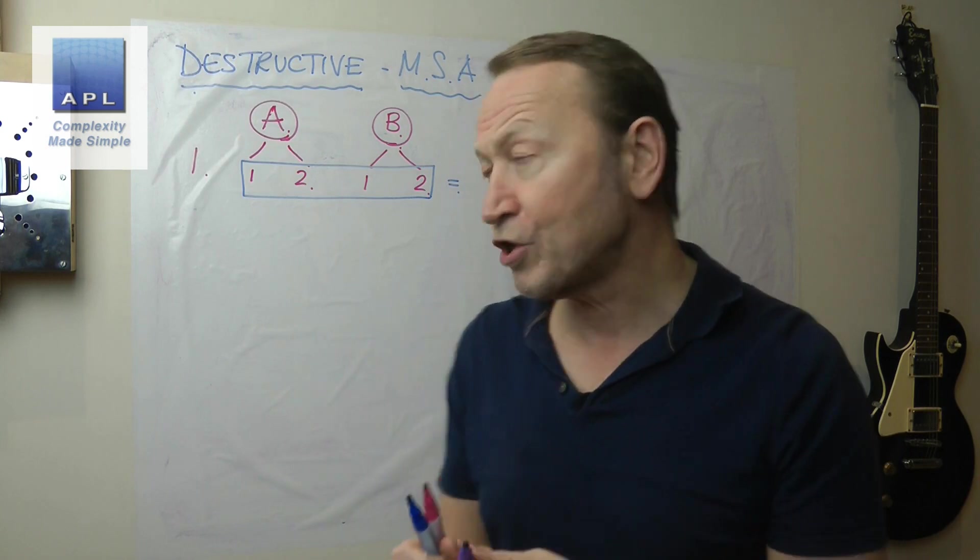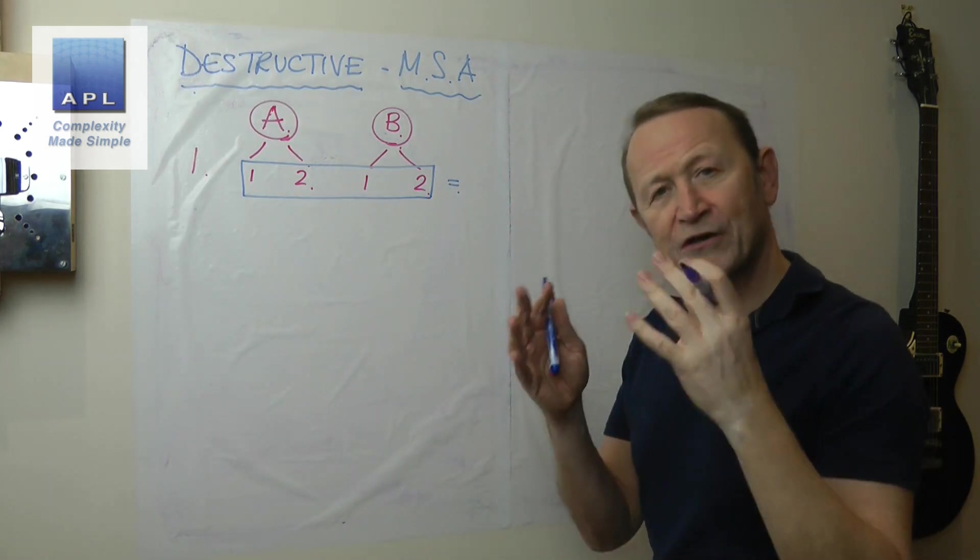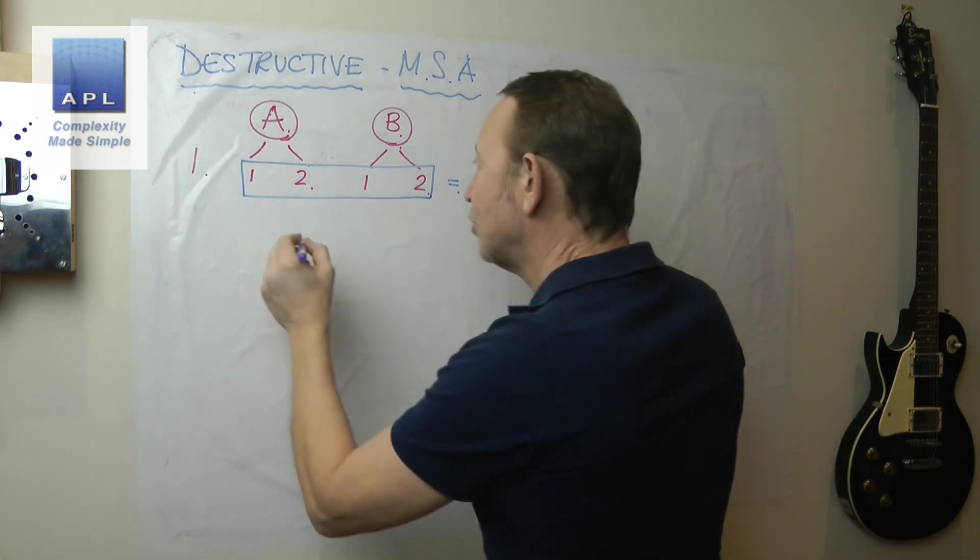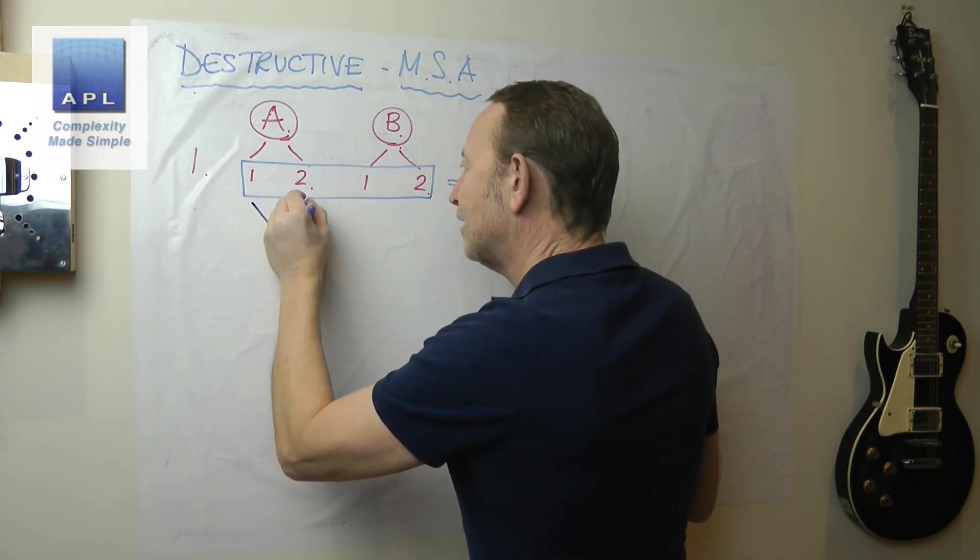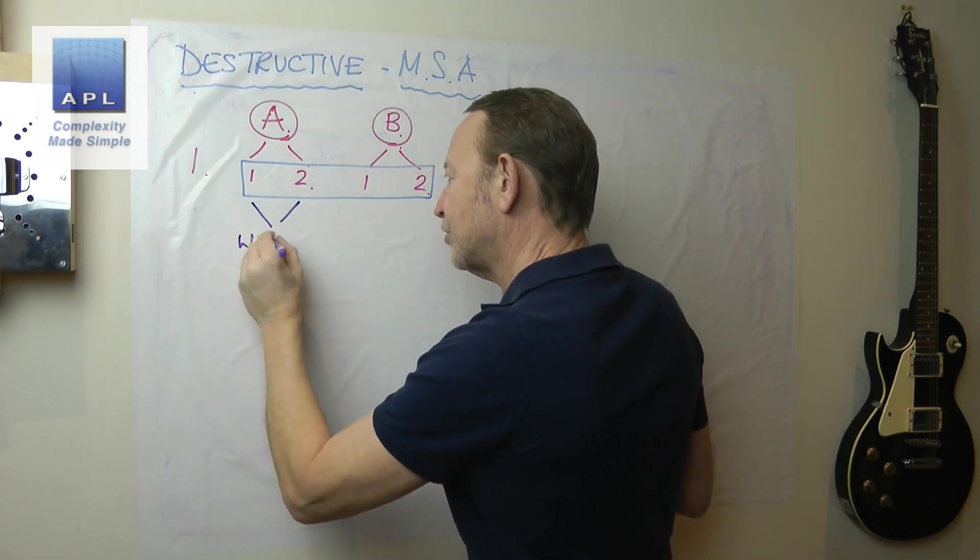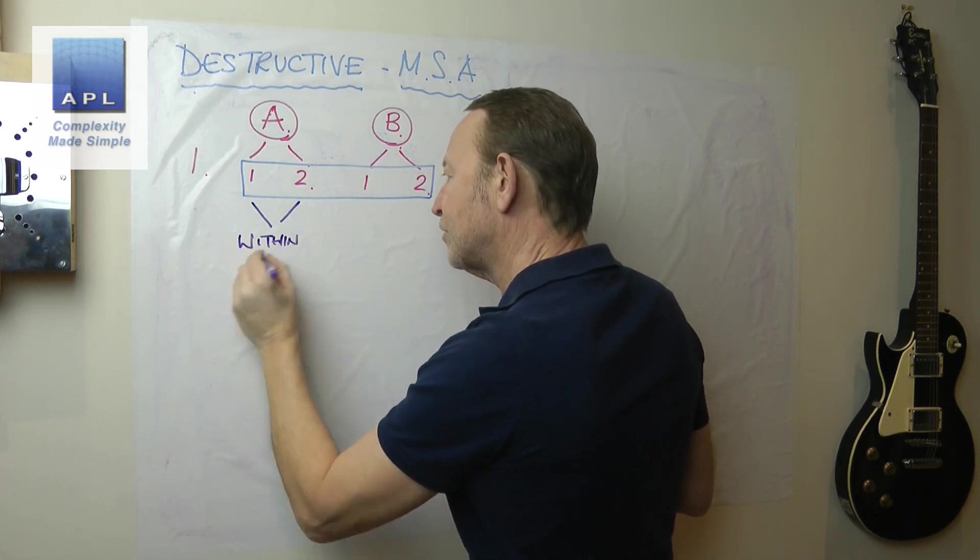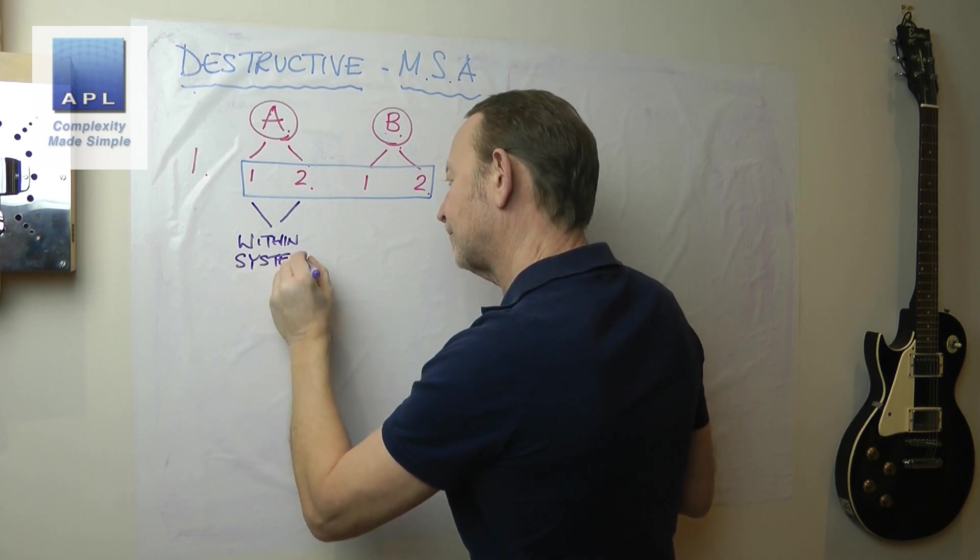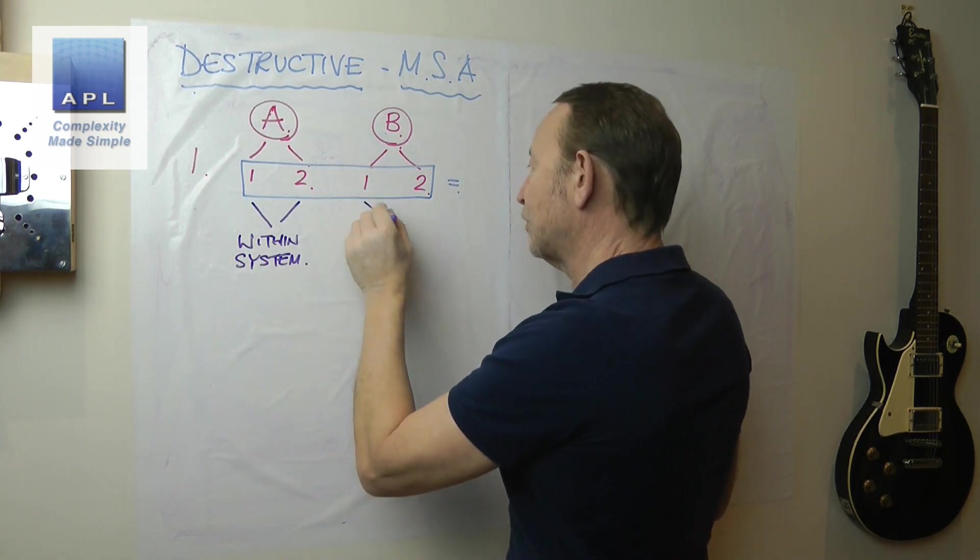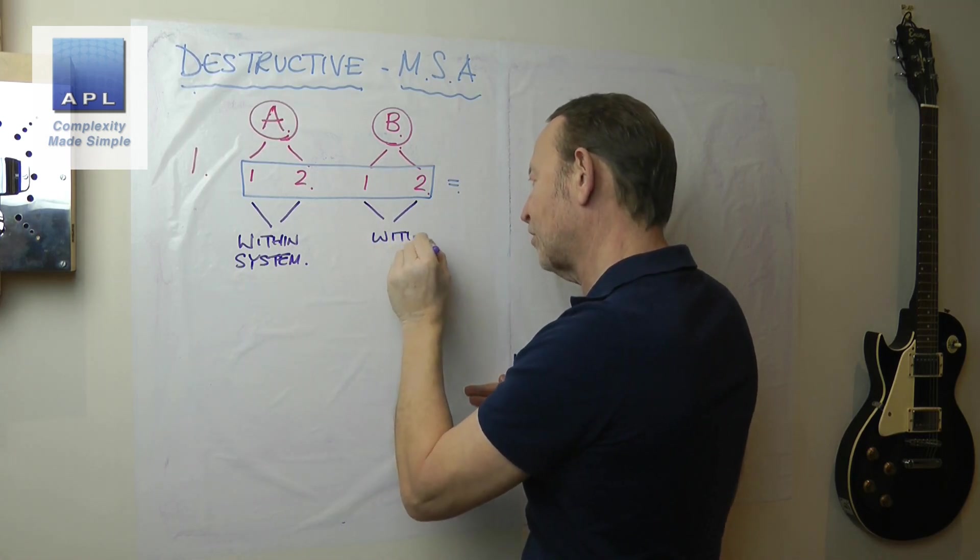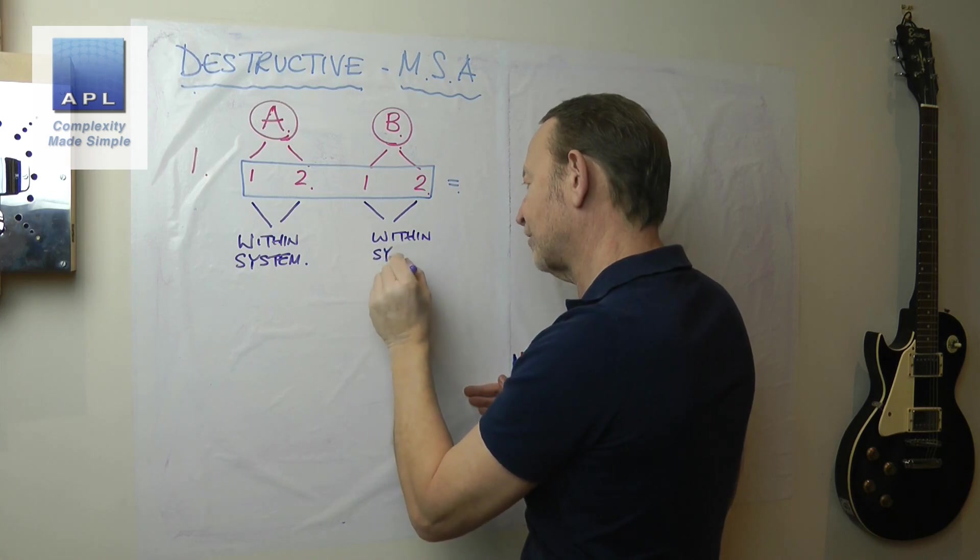Now there's two types of error. Let me just clarify something before we talk about the destructive test. There's two types of error. If these two are wrong, this is within system. Obviously if these two are wrong, this is also within system.